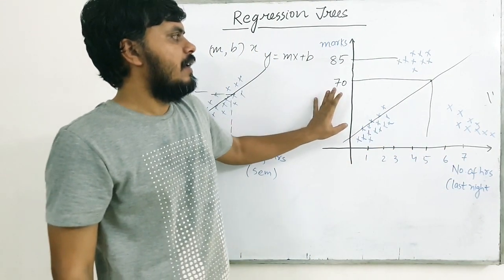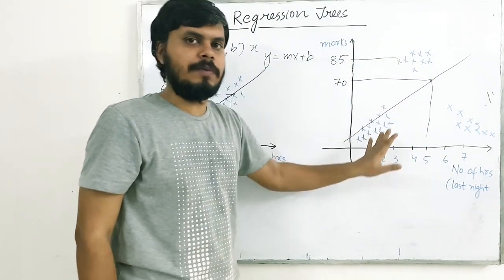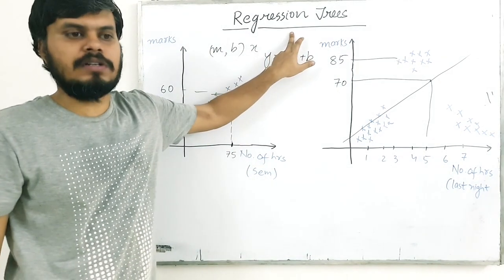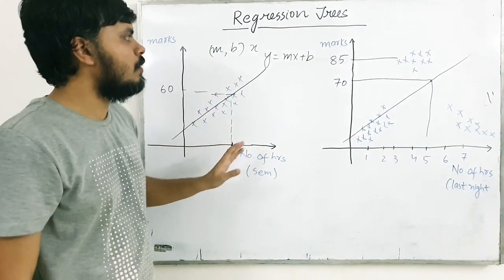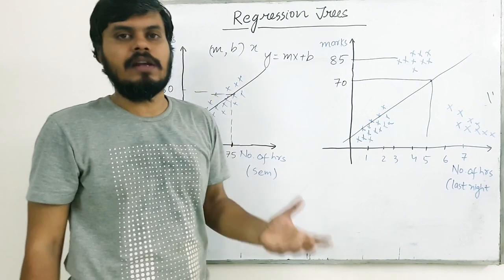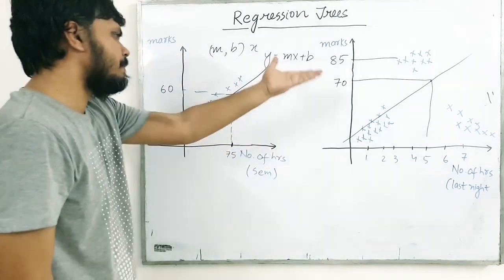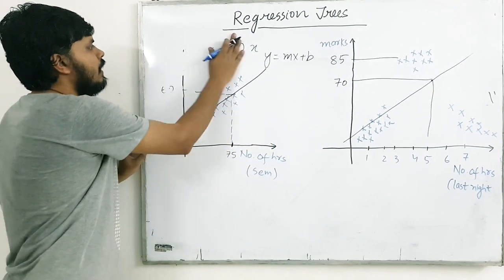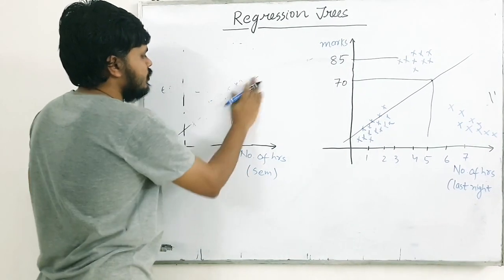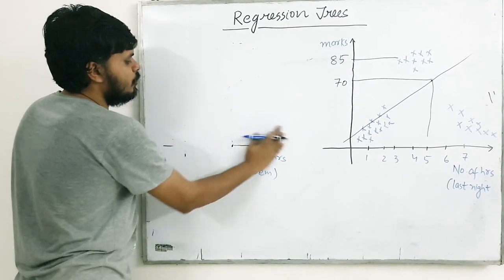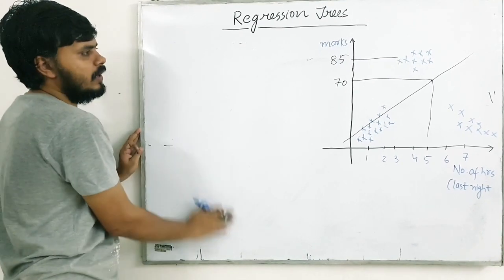Toh jab bhi data mein ek non-linear sort of relationship ho na, wahan pe aap regression tree use karte ho. Aur regression tree aapko better result deta hai in comparison to linear regression. Okay? So, I'll show you yahan pe problem kaise approach karoge. I'll rub this. So, what you will do is, aap data mein cuts maaroge. Kyunki decision trees na yahi karte ho. Aap data mein cuts maaroge. Right?